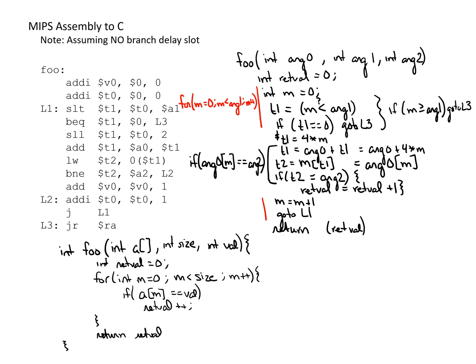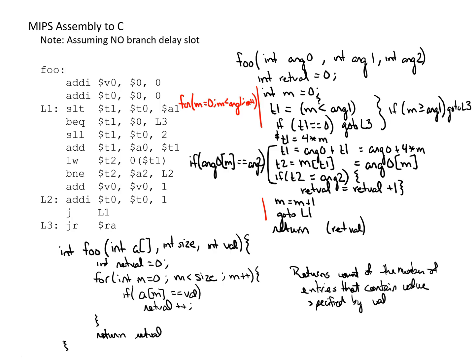At an even higher level, this function returns the count of the number of entries in the array that contain the value specified by the argument val. This is how we can analyze a block of MIPS code and figure out at a higher level what functionality it is performing.